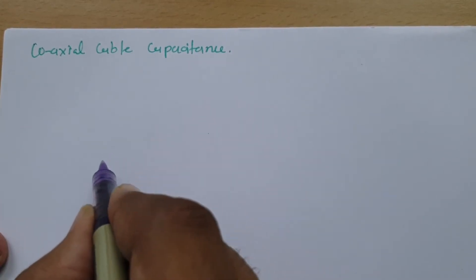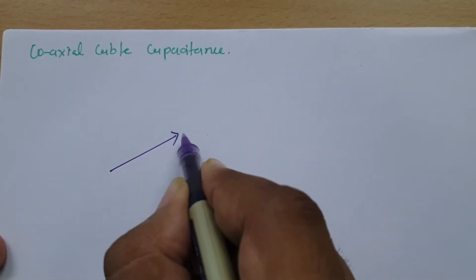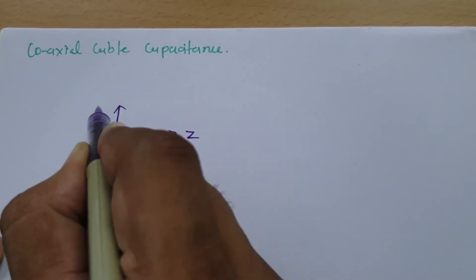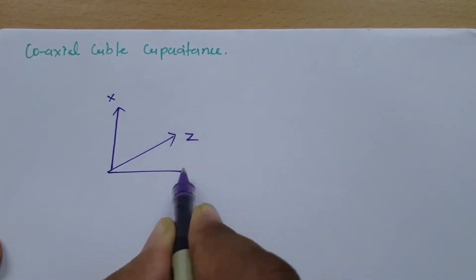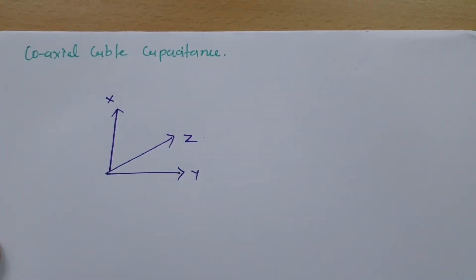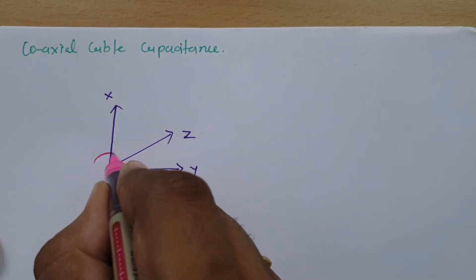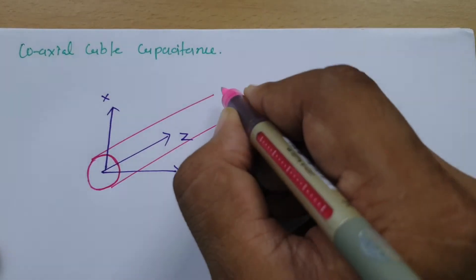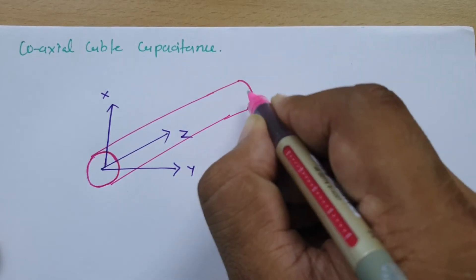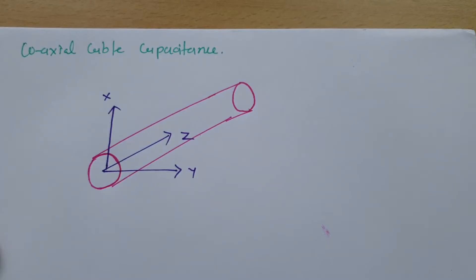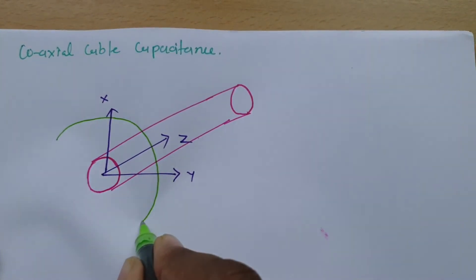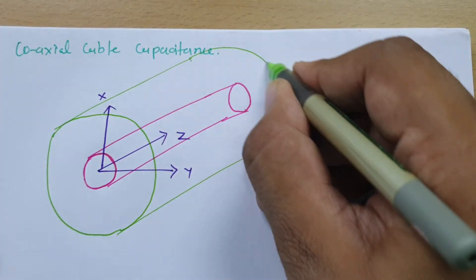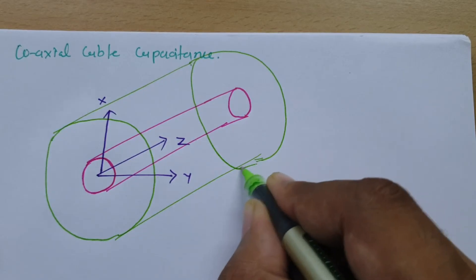Let us say this is the z direction, this is the y direction, and this is the x direction. Now in coaxial cable, there is an inner conductor going in the z direction, and you can also see the outer conductor surrounding it. So in 3D it is happening like this.